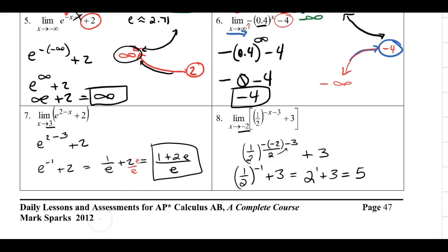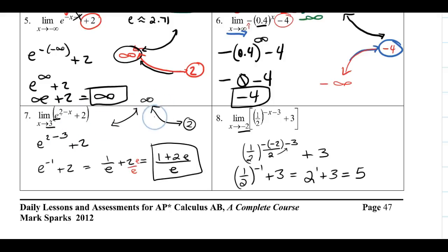For Examples 7 and 8, if you were to graph these functions, you might expect to use the infinity analysis — but these problems ask for the limit at a specific point (x = 3 or x = -2), not as x goes off toward infinity. Since exponential functions are continuous on their entire domain, the limit at any specific x value equals the function value, which is why direct substitution works directly.